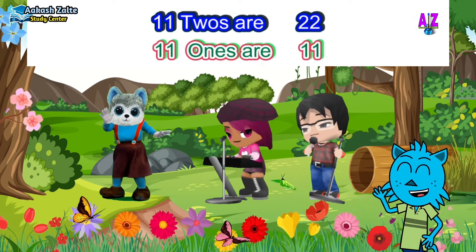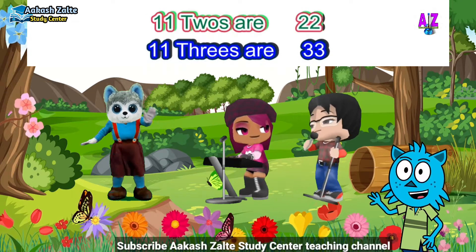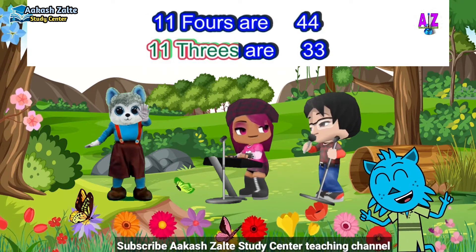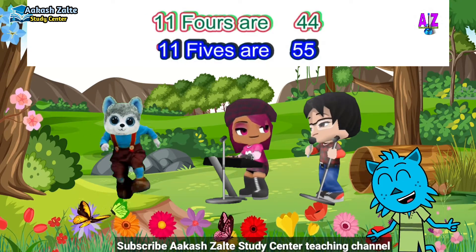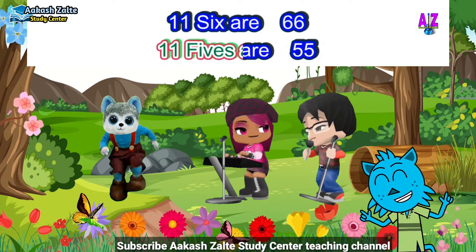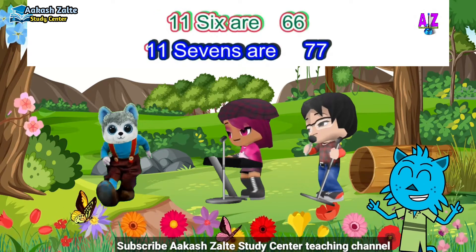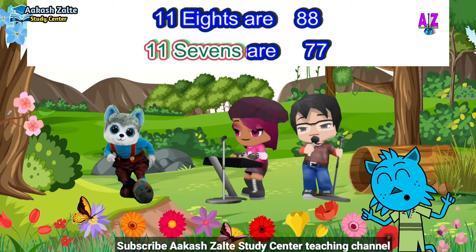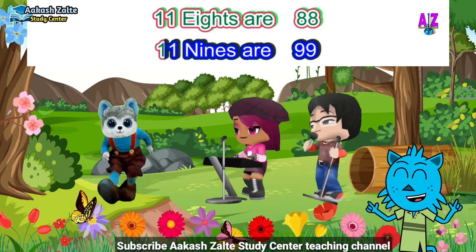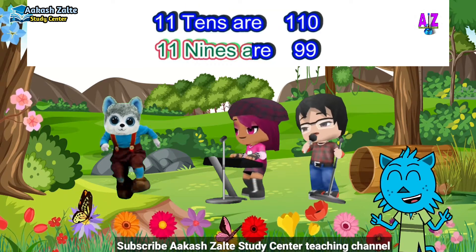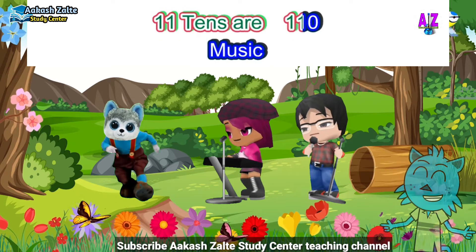11 ones are 11, 11 twos are 22, 11 threes are 33, 11 fours are 44, 11 fives are 55, 11 sixes are 66, 11 sevens are 77, 11 eights are 88, 11 nines are 99, 11 tens are 110.